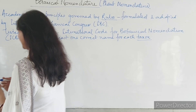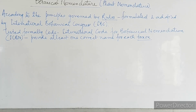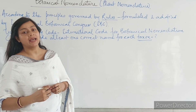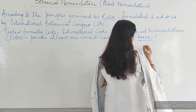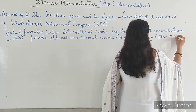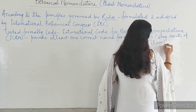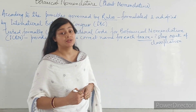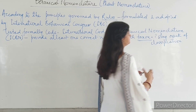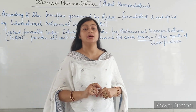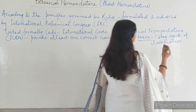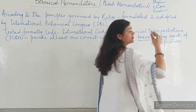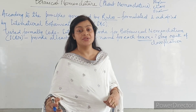Each taxon is provided one correct name by ICBN. What is a taxon? Actually, any rank of classification is known as a taxon. For example, during classification we classify any organism on the basis of ranks such as phylum, class, order, family, genus, species, and variety.